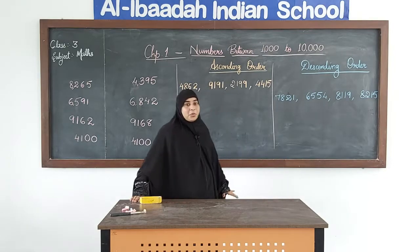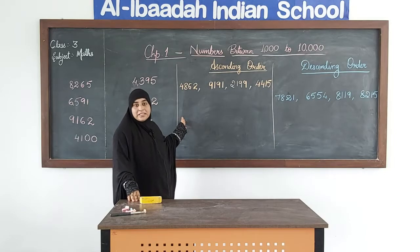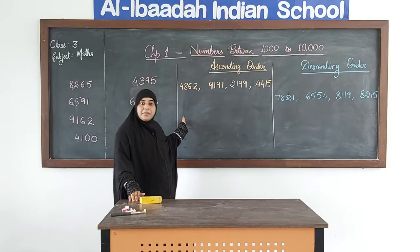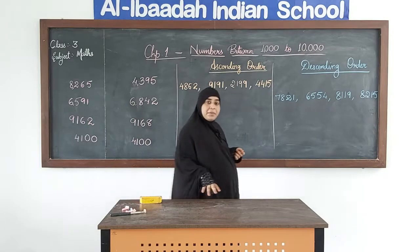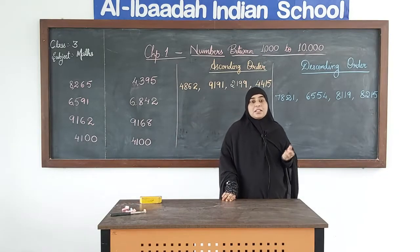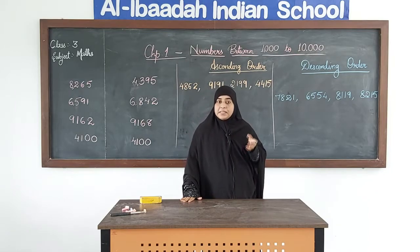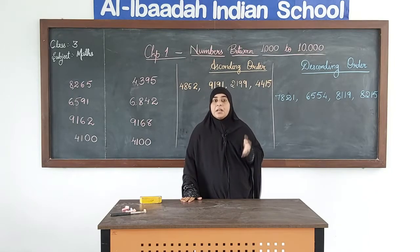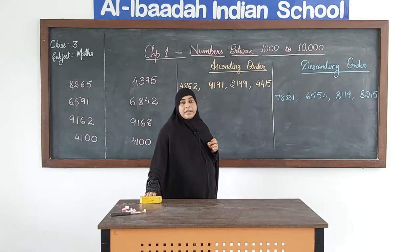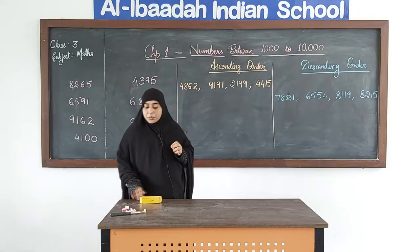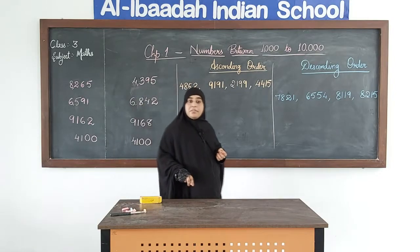Today we are going to take our same topic: 4-digit numbers, which we did in our previous class. Do you remember what we discussed? We had discussed 4-digit numbers — how we read the numbers, that is number names, the place values of the digits in a number, and how we write them in expanded form. These were the things we discussed in our previous video.